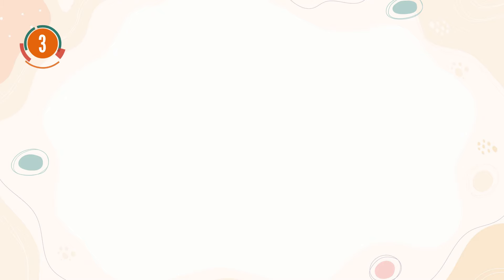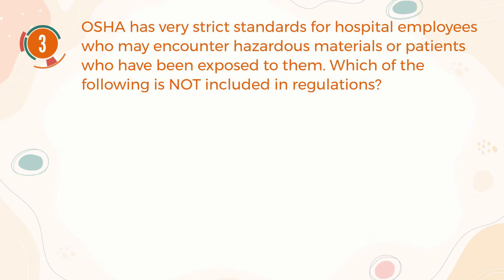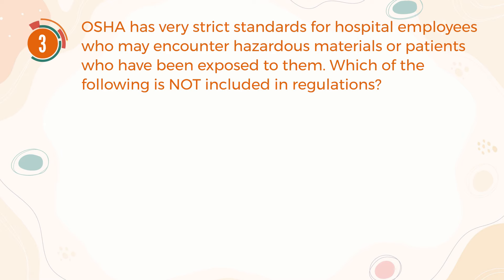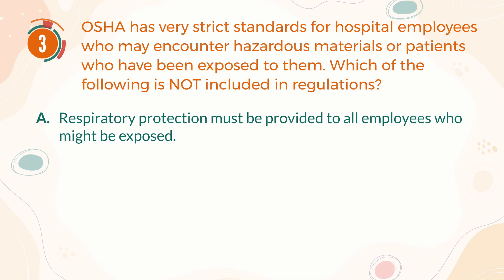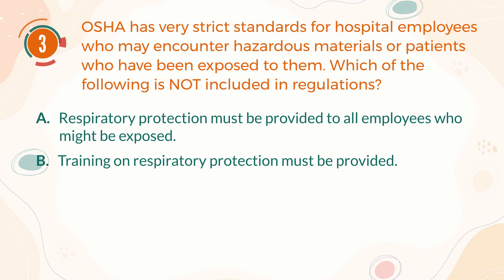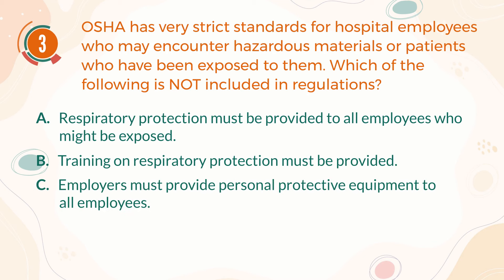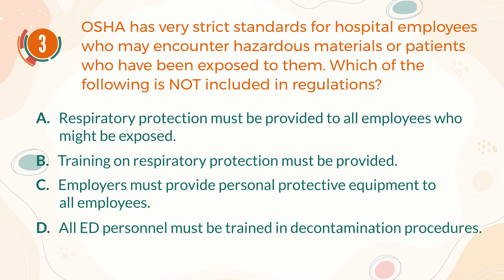Number 3. The Occupational Safety and Health Administration has very strict standards for hospital employees who may encounter hazardous materials or patients who have been exposed to them. Which of the following is not included in regulations? A, respiratory protection must be provided to all employees who might be exposed. B, training on respiratory protection must be provided. C, employers must provide personal protective equipment to all employees. D, all emergency department personnel must be trained in decontamination procedures.